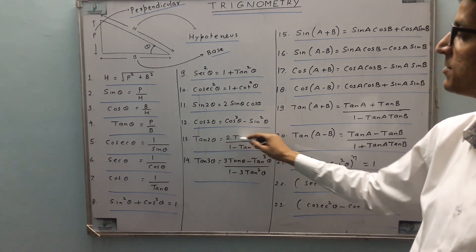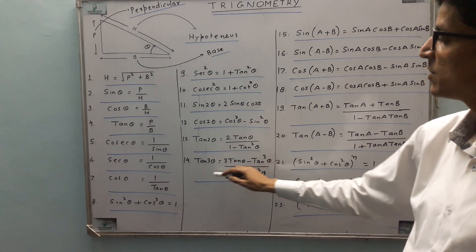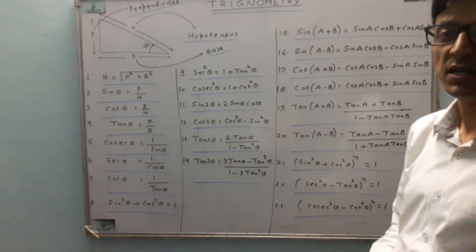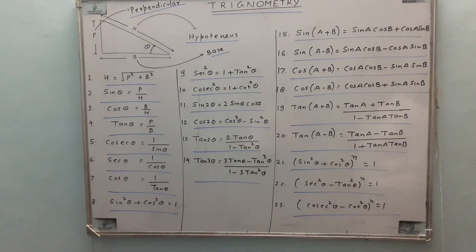13th is tan 2 theta is equal to 2 tan theta by 1 minus tan squared theta. 14th is tan 3 theta is 3 tan theta minus tan cubed theta by 1 minus 3 tan squared theta. Let's discuss some easy rules.